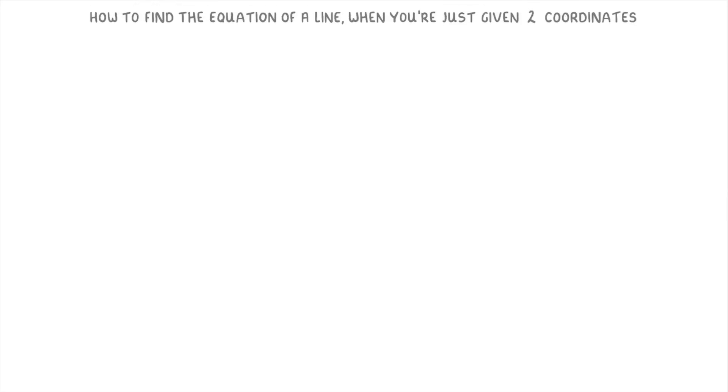In this video we're going to cover how you can find the equation of a line when you're just given two coordinates. In questions like this one where we're being asked to find the equation of a straight line that passes through the points (-2, -3) and (2, 5).